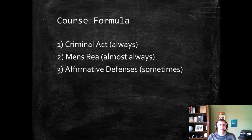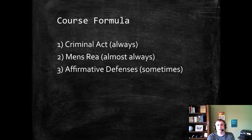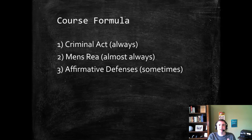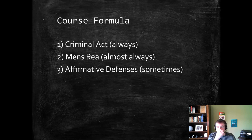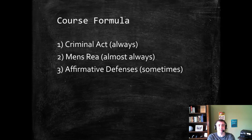Then we'll get to affirmative defenses, both at the end of the course and then with some particular types of crimes called inchoate crimes, primarily attempt and conspiracy. Affirmative defenses are arguments that the defense makes even after the act requirement and mens rea has been proven, arguing they still should be found not guilty. Obvious examples are self-defense, justification, necessity, and duress.